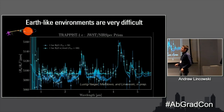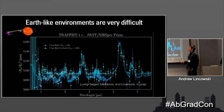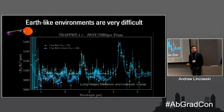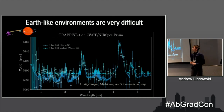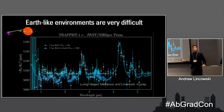For the potentially habitable planet TRAPPIST-1e, it looks pretty scary — you can see a CO2 band, but it requires 50 to 100 transits to detect these features. This might be something that, once we really understand James Webb's noise characteristics, we could convince the telescope allocation committee to pursue. But if you only get five transits of TRAPPIST-1e, you're not going to see anything or learn anything.